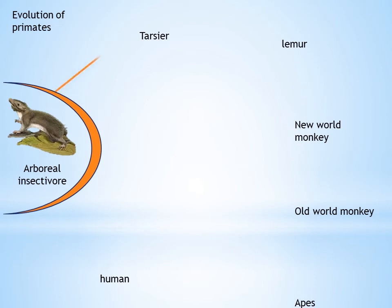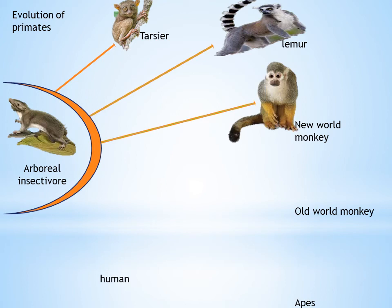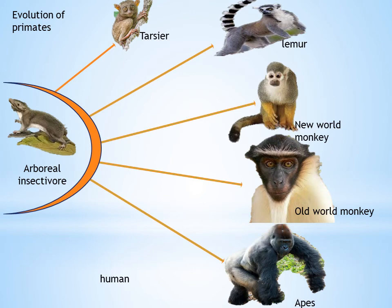To summarize the evolutionary sequence: arboreal insectivores gave rise to tarsiers, then lemurs — where hands and hind limbs became grasping and snout became short. Then came new world monkeys such as spider and squirrel monkeys, followed by old world monkeys like baboons and langurs. Then apes — semi-erect, quadrupedal, with slanting forehead — and finally human beings. This is the evolution of human beings in short.